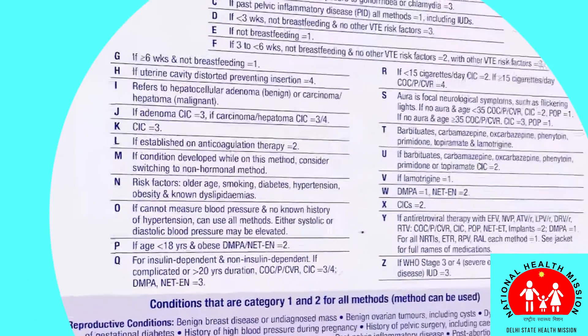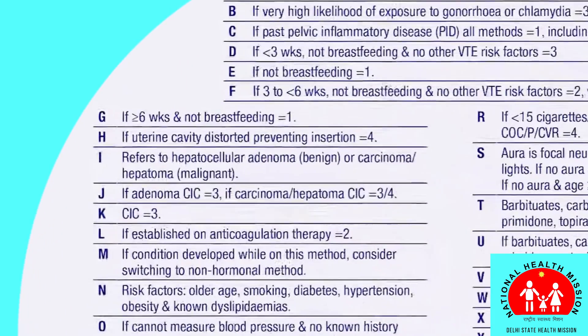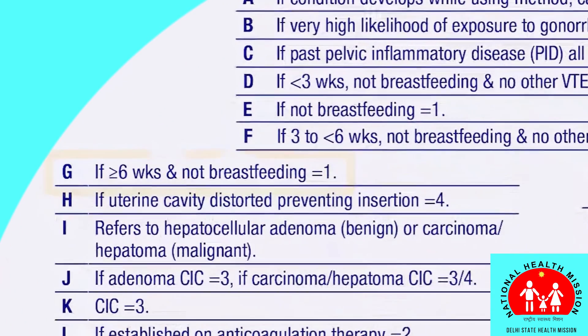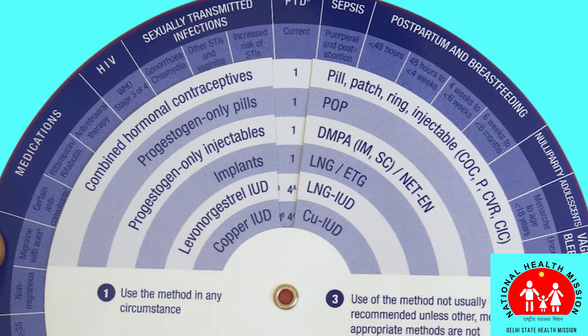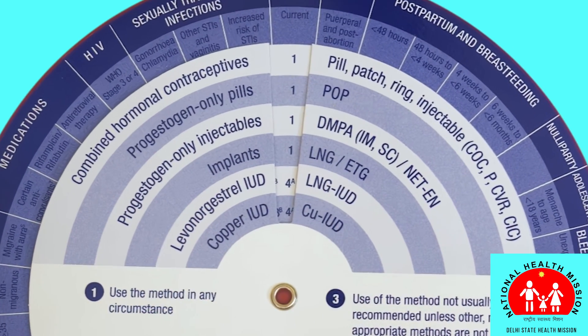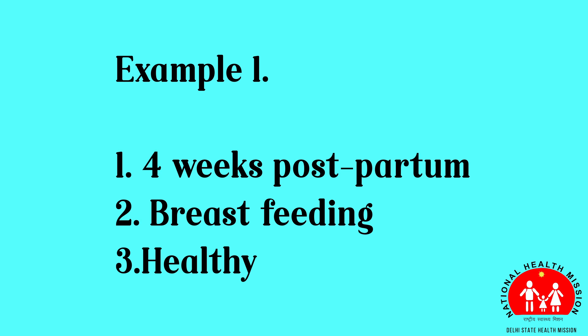The G indicates the pill is safe to use if the woman is more than six weeks postpartum and is not breastfeeding. Spend time with the MEC wheel to become familiar with conditions that are not safe with each contraceptive method.